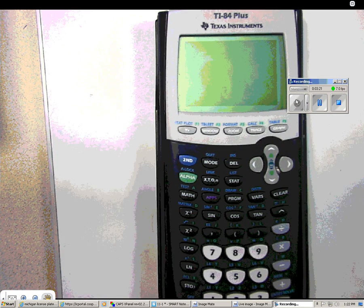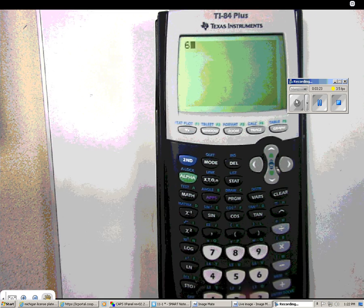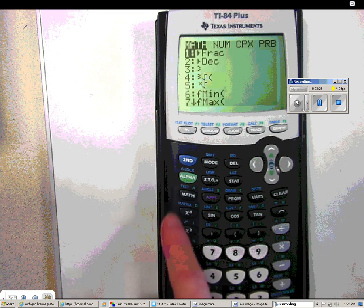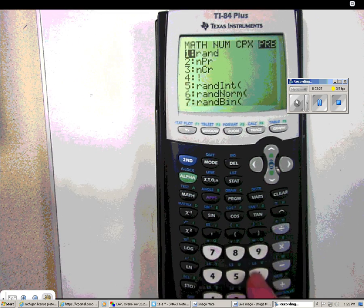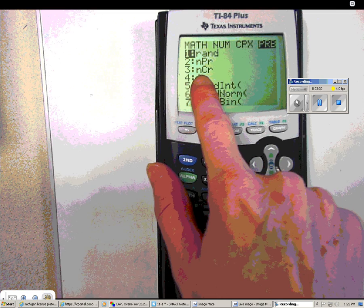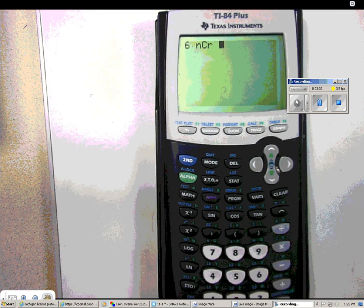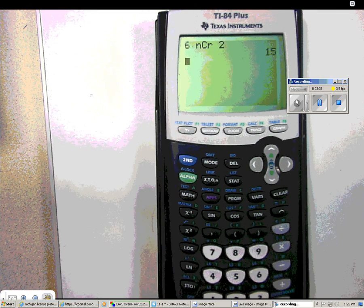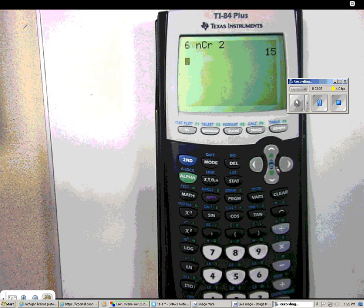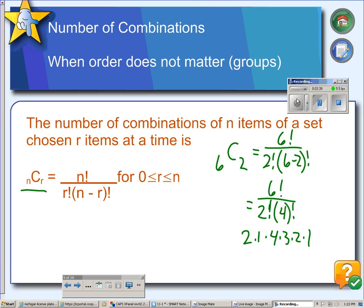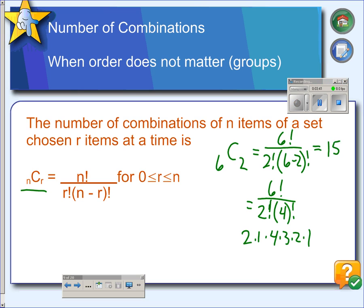So if we're calculating 6C2, you put in the 6, go to math, choose probability, and then choice number 3 is NCR. And last, we put in our R value, which was 2, and we get 15.